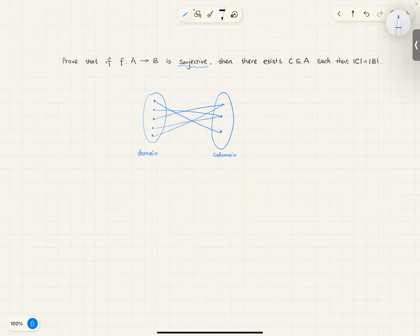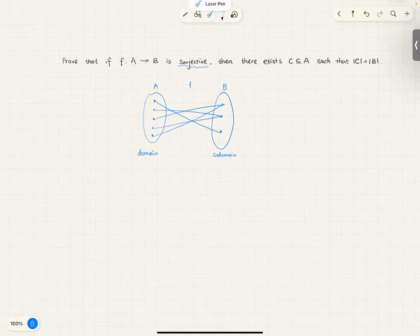Okay, so this is a surjective map. If I have f mapping from A to B, so this is A, this is my B, then there must exist a subset of A such that the cardinalities are the same. So, I hope this whole thing makes sense to you because, well, if it's surjective, then...